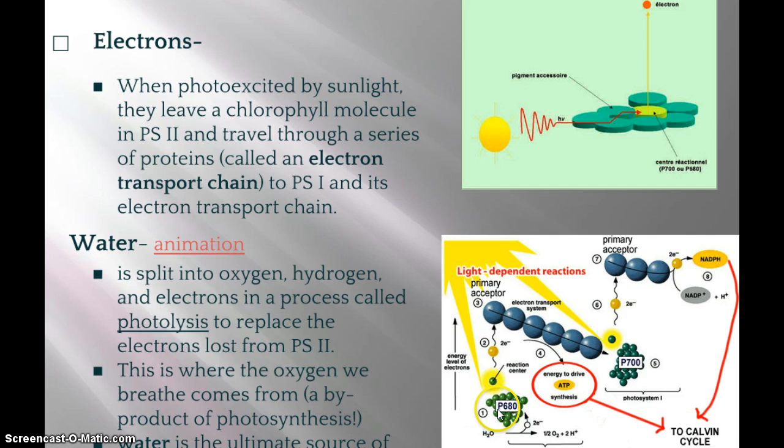Here's a picture of photosystem 2, otherwise known as P680. That's where the reaction center is embedded. Light comes down, excites an electron, the electron gets bounced up. Meanwhile, photosystem 2 steals electrons from water — two electrons get pulled in, the hydrogen ions are released inside the thylakoid membrane, and oxygen gas is off-gassed as a waste product.